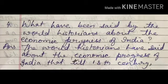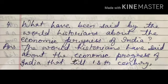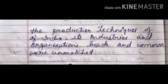Fourth question: what have been said by the world historians about the economic progress of India? The world historians had said about the economic progress of India that till the 18th century, the production technique of India, its industry and organization, trade and commerce were unmatched.